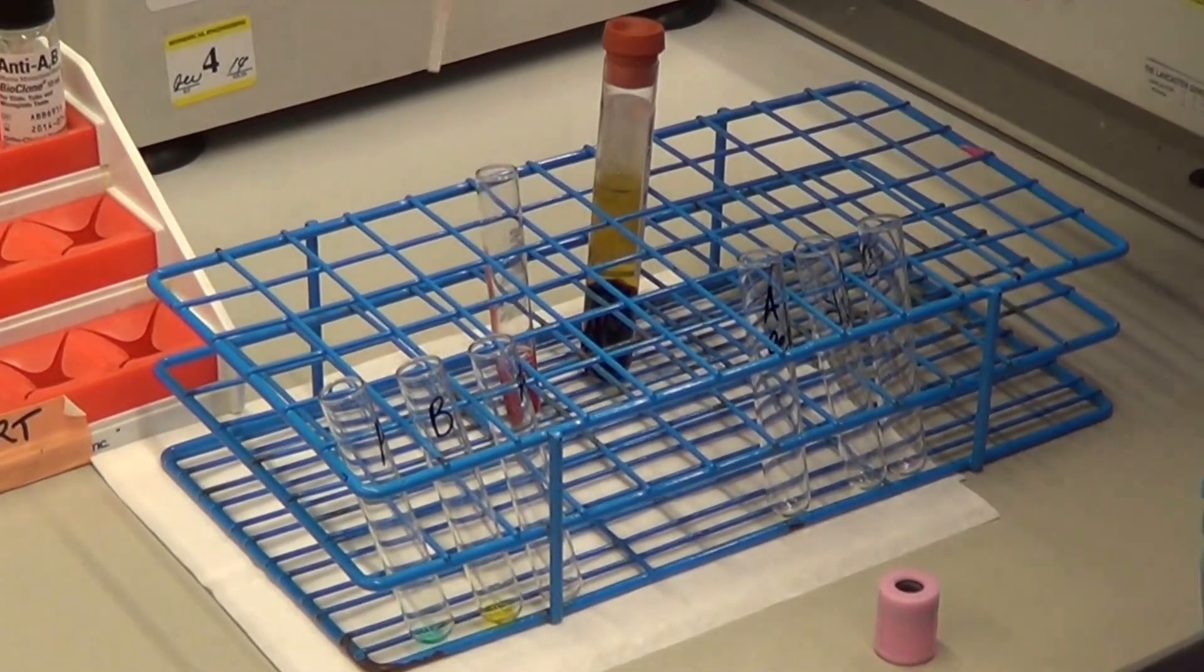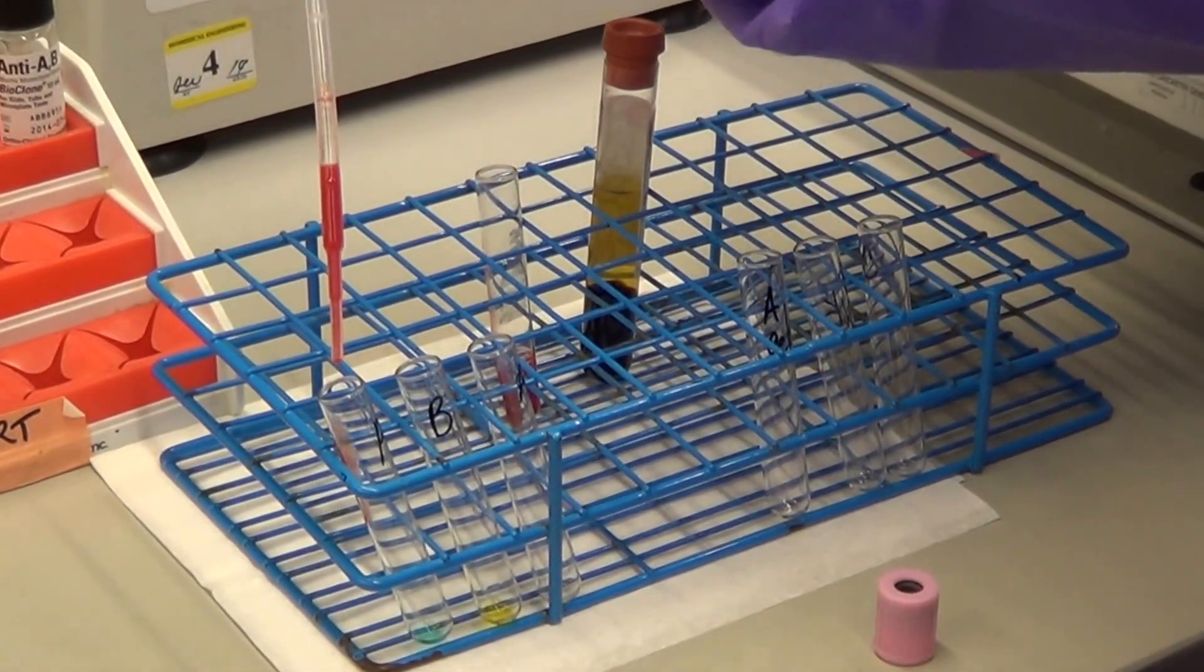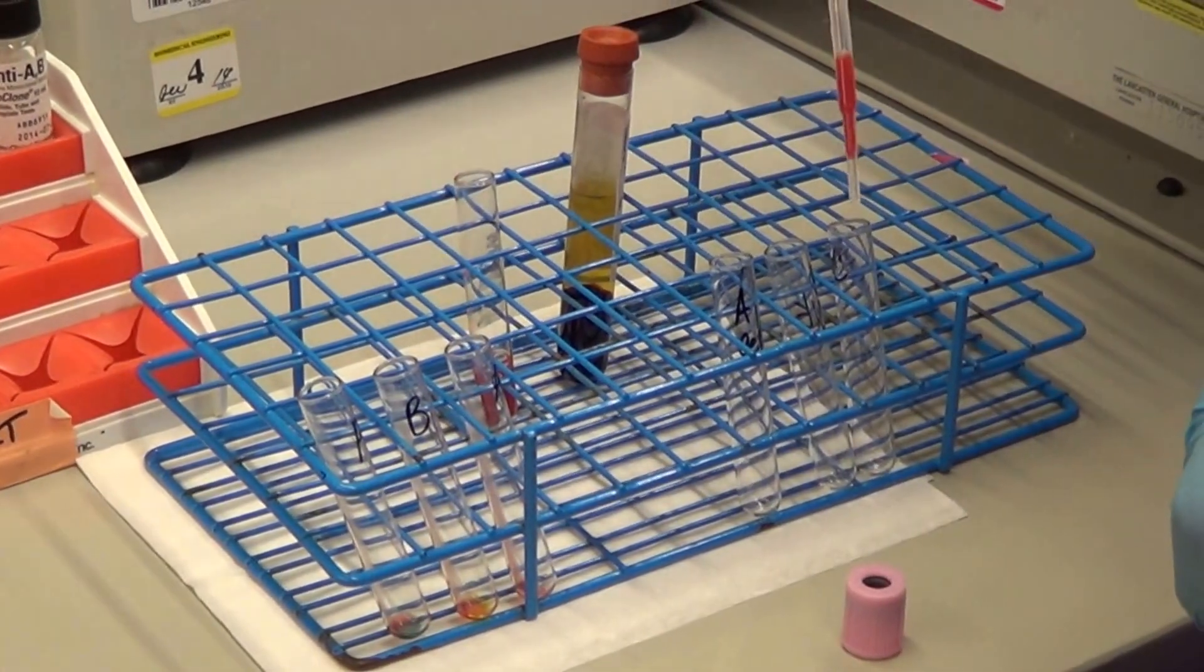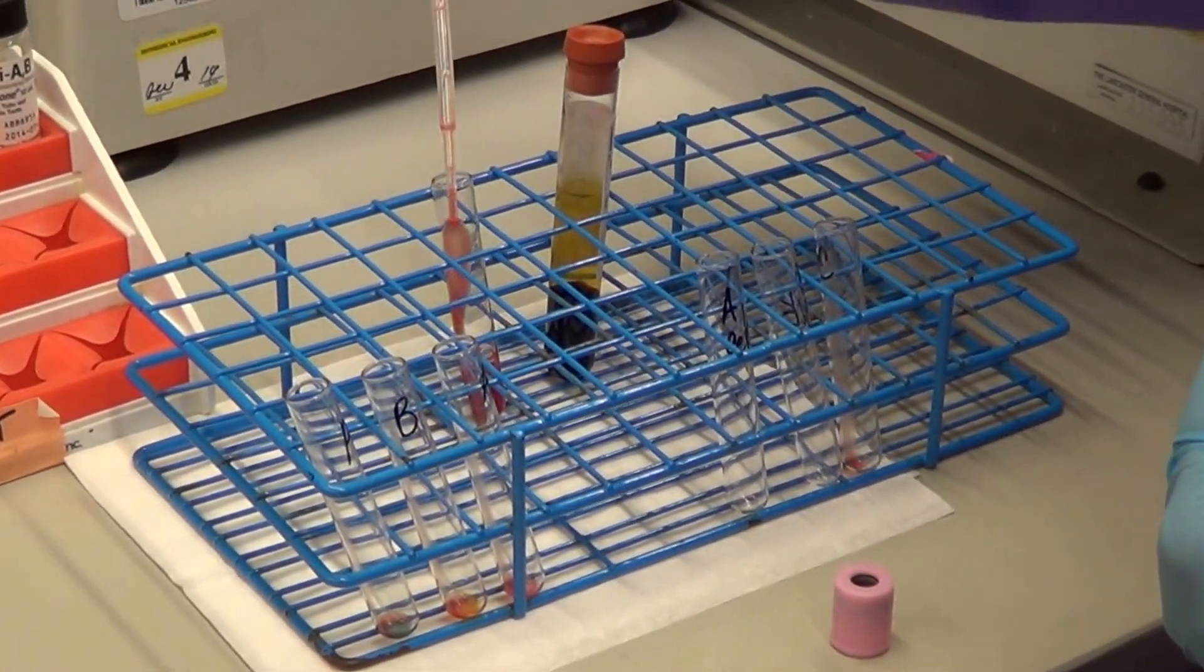Once that is made, you add one drop of the cell suspension to the reagents in the test tubes, and you add one drop to your auto control.